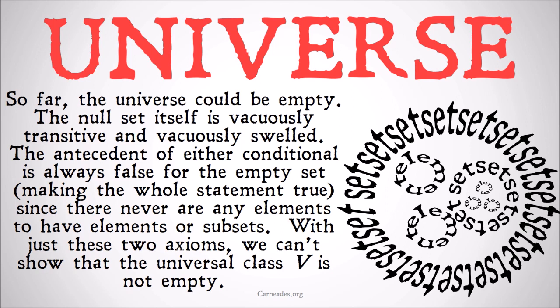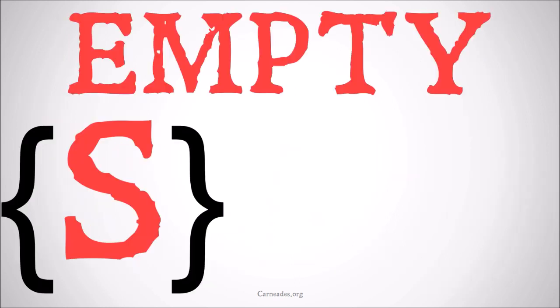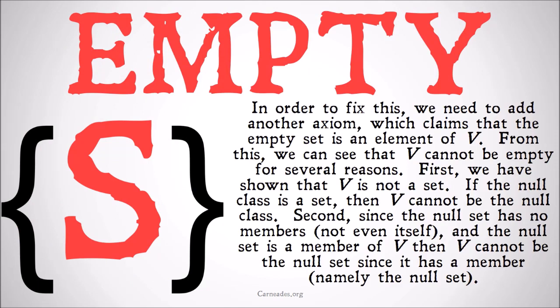We have to add more axioms to be able to prove more about the sets that exist. So in order to do that, we need to get an axiom that says that the universal class is not the null set. We're going to say that the null class is a set — the empty class is a set. So we need to add another axiom which claims that the empty set is an element of V.